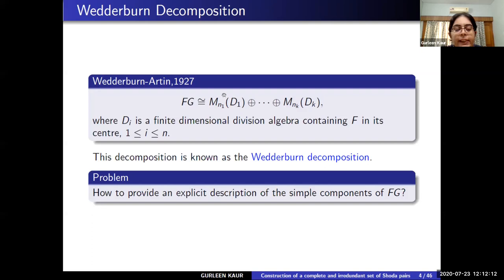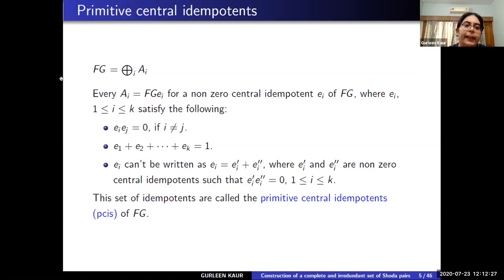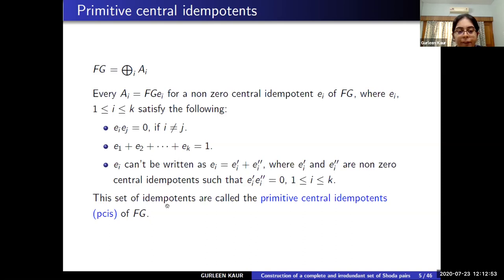But this is a theoretical description — it doesn't provide us knowledge about the ideals. So the basic problem in group algebra is how to provide an explicit description of the simple components of FG. It is known that if FG is treated as a direct sum of simple components, say A_i, then each A_i is generated by a non-zero central idempotent, say e_i of FG, where they are mutually orthogonal, sum to one, and cannot be broken into two non-zero central mutually orthogonal idempotents. This set of idempotents is called the primitive central idempotents of FG, abbreviated as the PCIs of FG. Once you know the complete set of PCIs of FG, you generate the ideals and get the simple components, but you still don't know their description in terms of matrix algebras over division rings.